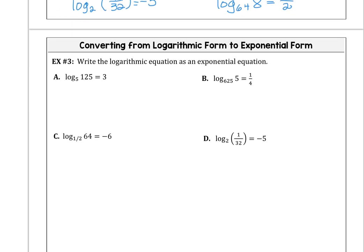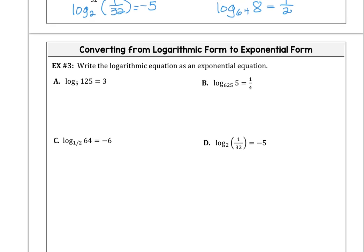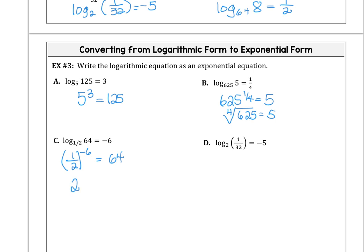Hopefully these are easy and you've recognized them from your previous course. Let's go backwards — we want to take the log equation and rewrite it as an exponential equation. 5 cubed is 125. 625 to the 1/4 power is 5, or you could rewrite that as the fourth root of 625. 1/2 to the negative 6 power is 64 — equivalently 2 to the positive 6 is 64. And 2 to the negative 5 power is 1/32.